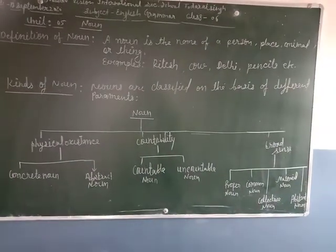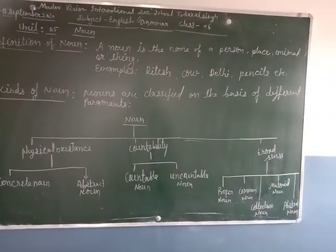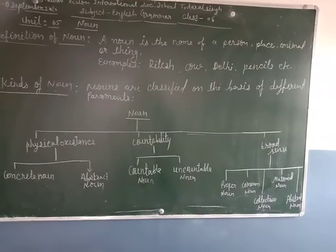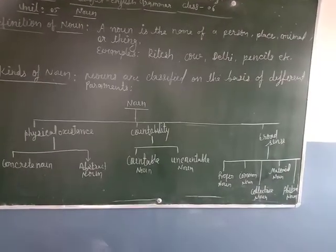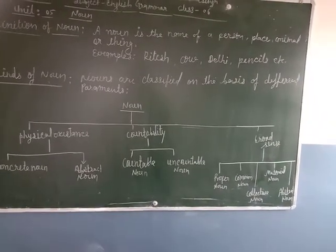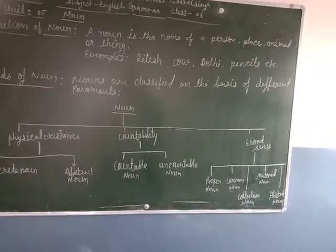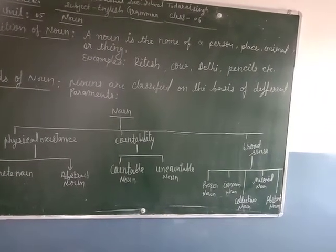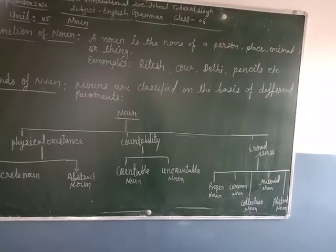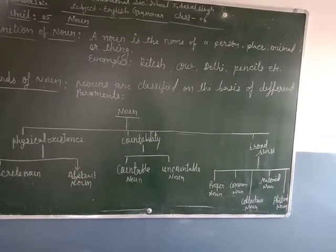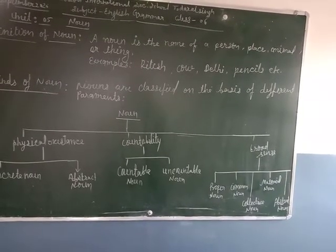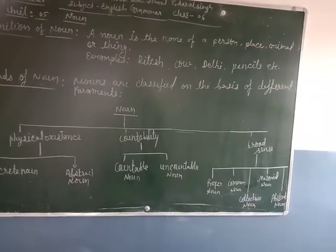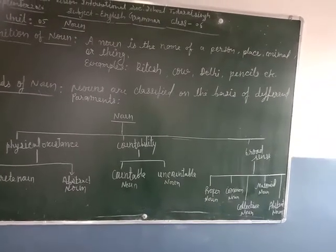Dear student, on the basis of countability, nouns are classified as countable noun or uncountable noun. Countable nouns can be counted as one, two, three. For example: boys, two boys, books, people, chairs, etc.